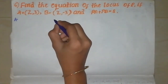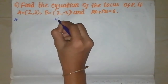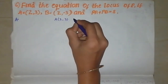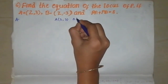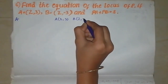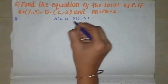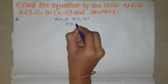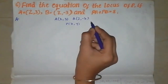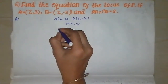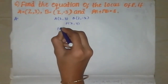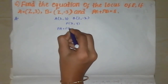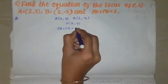So we have A equal to (2,3) and B equal to (2,-3), and the condition is PA plus PB is equal to 8.